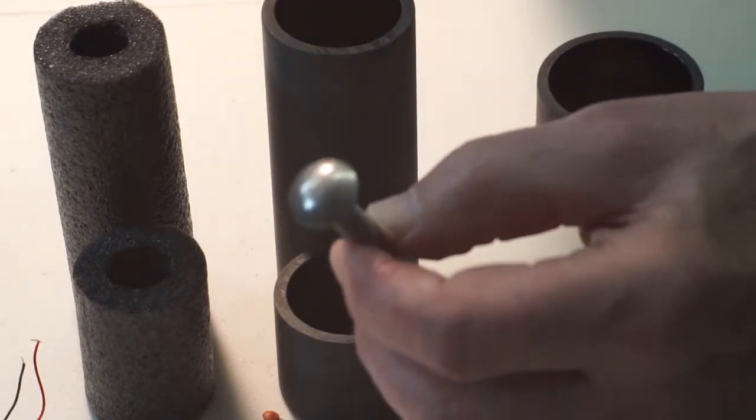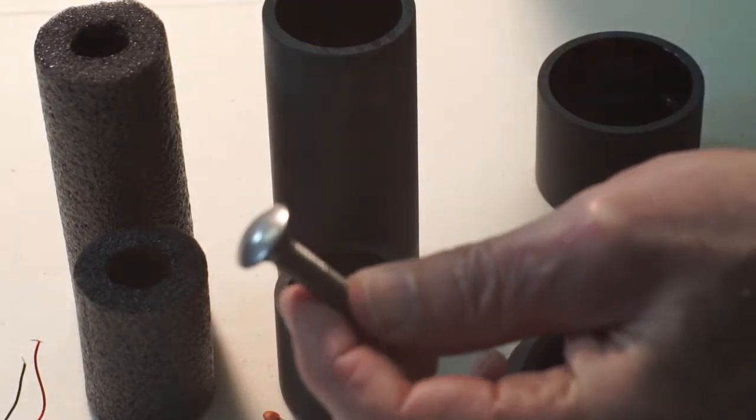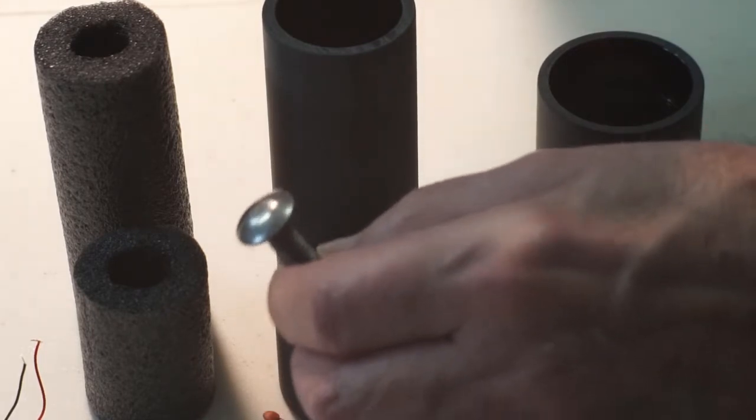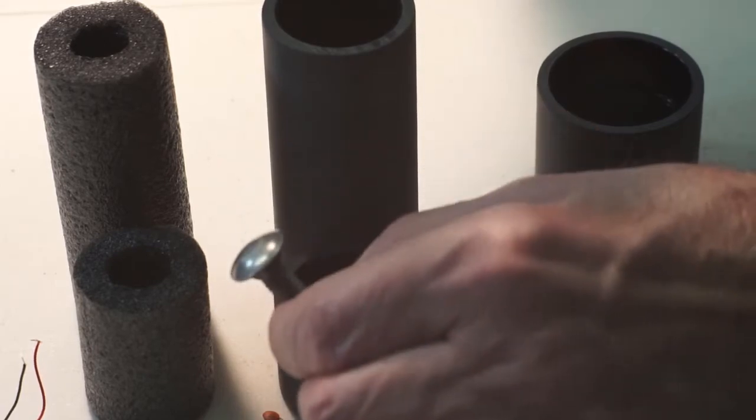A 5/16 inch carriage bolt, about an inch and a half long. Whatever you've got. It's going to end up being the contact tip for the stethoscope.